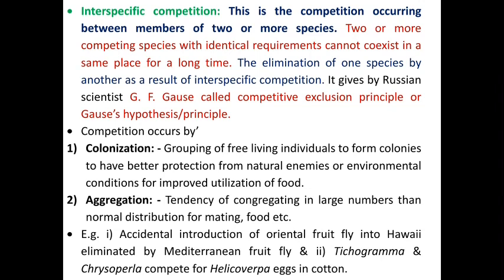Interspecific competition occurs between members of two or more species. Two or more competing species with identical requirements cannot coexist in the same place for a long time. The elimination of one species by another as a result of interspecific competition was described by scientist G.F. Gause, and is known as the Gause hypothesis or Gause principle. In this competition, colonization and aggregation occur. Examples include the accidental introduction of oriental fruit fly into Hawaii displacing the Mediterranean fruit fly, and Trichogramma and Chrysoparla competing for Helicoverpa eggs in cotton.